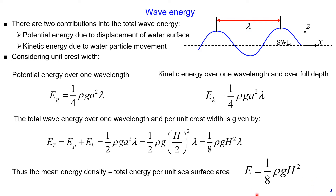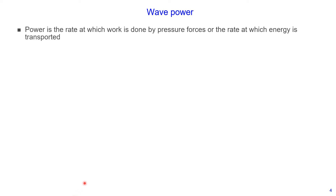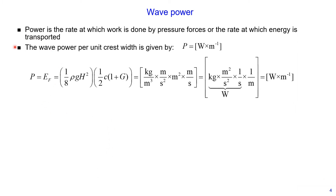The mean energy density only depends on wave height — the higher the wave, the greater the total energy per unit sea surface area. Power is defined as the rate at which work is done by pressure forces, or equivalently, the rate at which energy is transported. The wave power per unit crest width equals the mean energy flux, which equals the mean energy density multiplied by group velocity.